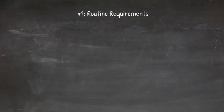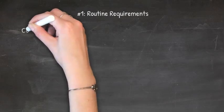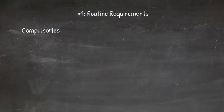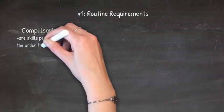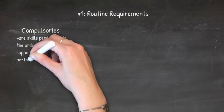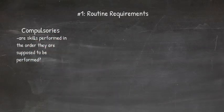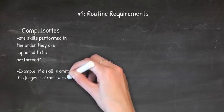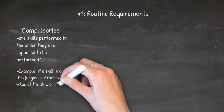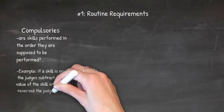The first thing judges look for is whether the routine requirements were met. In compulsories, all gymnasts perform the same routines and all skills have to be performed in the same order — including specifics like always using the left leg or always the right leg. If a skill is omitted, judges can subtract twice the value of that skill. If a skill is reversed, such as doing the right foot first instead of the left, judges can subtract half the value of that skill.